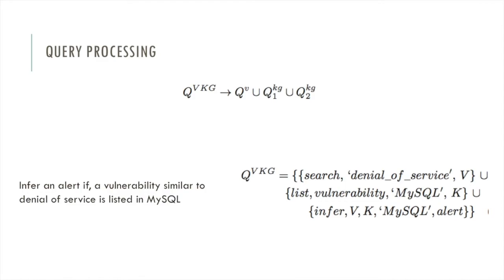For a cybersecurity example, let a query input be infer an alert if a vulnerability similar to denial of service is listed in MySQL. The idea here is a part of the query about searching should run on the vector space model and the list and the infer part should run on the knowledge graph path.